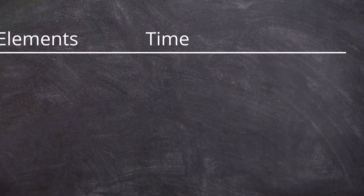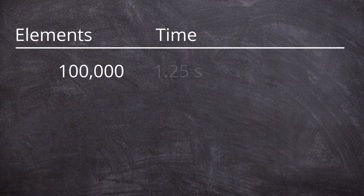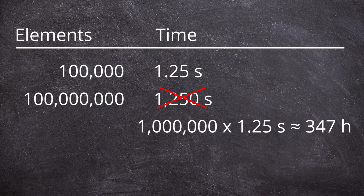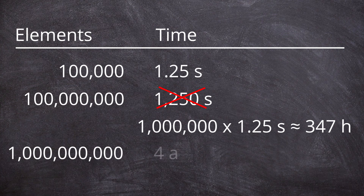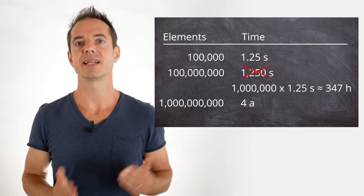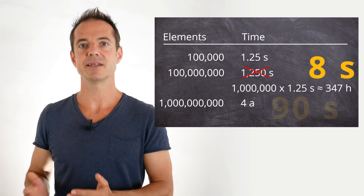Here is an example for selection sort. For 100,000 elements, selection sort takes about 1.25 seconds on my 2019 laptop. For 100 million elements — that is 1,000 times as many — it would not take 1,000 times as long, but 1,000,000 times as long. That would be 347 hours. For 1,000,000,000 elements, it would be almost 4 years. On this same hardware, Quicksort manages 100 million elements in 8 seconds and a billion elements in a minute and a half.